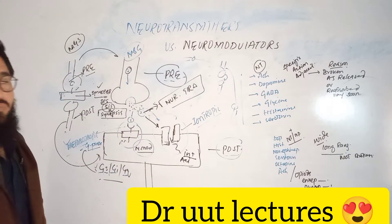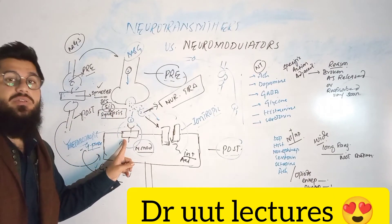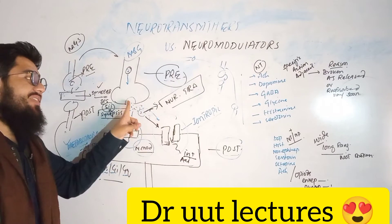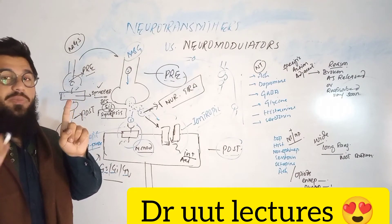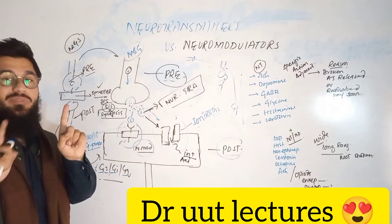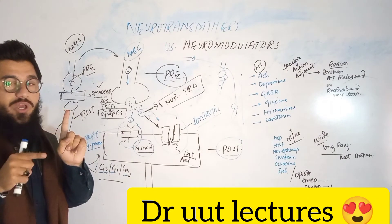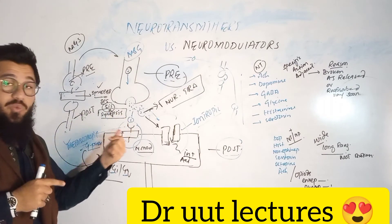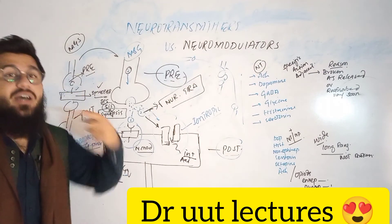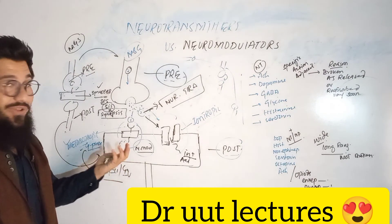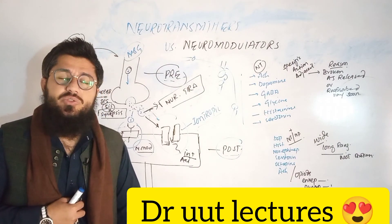To summarize: if a chemical interacts with a metabotropic receptor, it is called a neuromodulator — slow action. If it interacts with an ionotropic receptor, it is called a neurotransmitter — quick action. One chemical can perform both jobs: it can be a neurotransmitter at one time and a neuromodulator at another. I hope you got it — if you still have confusion, drop it in the comment box. Don't forget to tell your friends about Dr. UUT lectures.